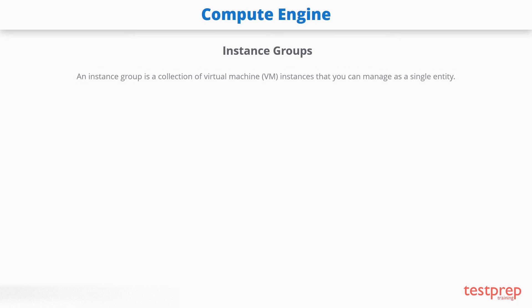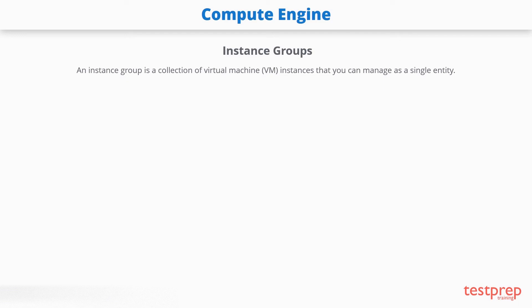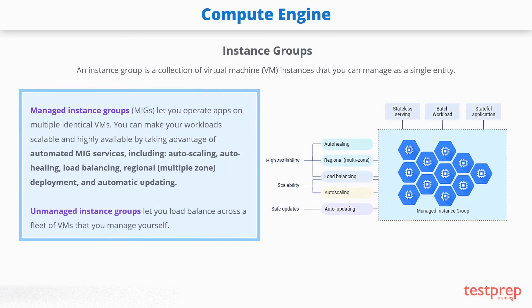Instance groups: An instance group is a collection of virtual machine instances that you can manage as a single entity. Compute Engine offers two kinds of VM instance groups: managed and unmanaged. Managed instance groups let you operate apps on multiple identical VMs. You can make your workloads scalable and highly available by taking advantage of automated services, which include auto scaling, auto healing, load balancing, regional multiple zone deployment, and automatic updating. Unmanaged instance groups let you load balance across a fleet of VMs that you manage yourself.